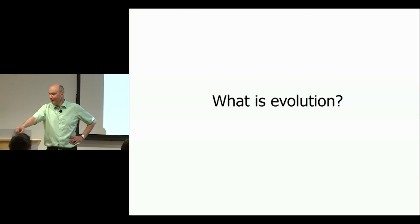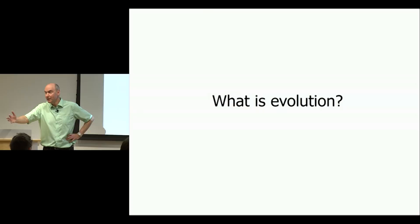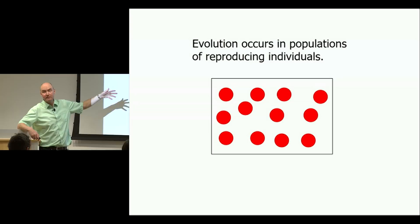We begin with the following question: what is evolution? Ernst Mayr, an evolutionary biologist who lived to be more than 100 years of age, wrote a book called What Evolution Is. In that book he asks what is evolution, what is it that evolves. He says we talk figuratively about evolution of species, genes, genomes, or the brain. But the only thing that actually evolves is the population — the carrier of the evolutionary process is the population of reproducing individuals.